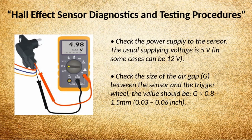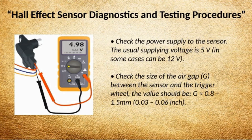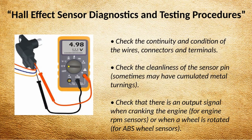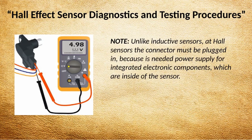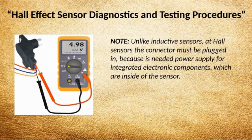Hall Effect Sensor Diagnostics and Testing Procedures. Check the power supply to the sensor — the usual supply voltage is 5 volts, in some cases 12 volts. Check the size of the air gap G between the sensor and the trigger wheel — the value should be G: 0.8 to 1.5 mm (0.03 to 0.06 inch). Check the continuity and condition of the wires, connectors, and terminals. Check the cleanliness of the sensor pin, as it sometimes may have accumulated metal turnings. Check that there is an output signal when cranking the engine for engine RPM sensors, or when a wheel is rotated for ABS wheel sensors. Unlike inductive sensors, at Hall sensors the connector must be plugged in, because power supply is needed for the integrated electronic components inside the sensor.